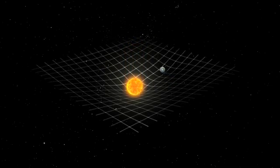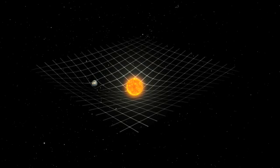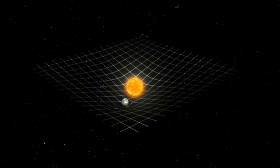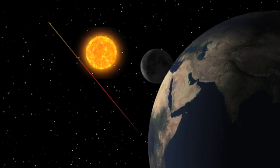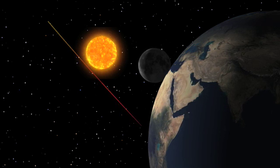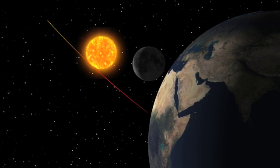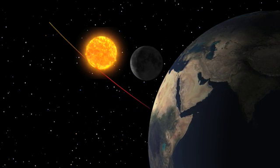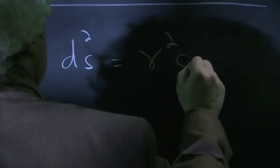We know mass distorts space. We know light is affected by gravity. And we know Einstein's theory of general relativity makes possible one of the strangest objects ever imagined by physicists.